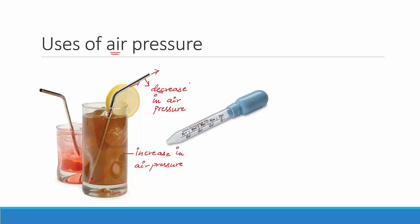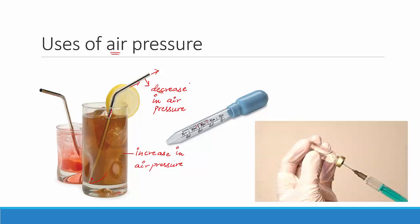A similar mechanism is used in the medicine dropper — the kind used for administering polio drops — and also in a syringe. You can draw medicines into a syringe through decrease and increase in air pressure. So the straw, the medicine dropper, and the syringe all function on the same principles of increase and decrease of air pressure. This shows the importance of air pressure.